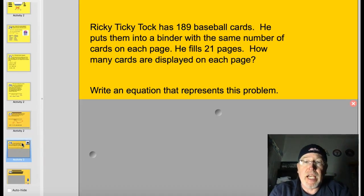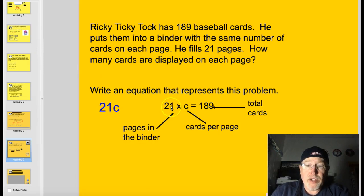Take a look at this one here. Rikki-tiki-tok has 889 baseball cards. He puts them into a binder with the same number of cards on each page. He fills 21 pages. How many cards are displayed on each page? Write an equation that represents this problem. Go ahead and pause it for a minute and see if you can solve that one by yourself. Number of pages in the binder was 21. We don't know how many cards per page, but he had 21 pages times this many cards on each page for 189 total. You probably would have seen it written as 21c. I'm trying to get you used to seeing that both ways.